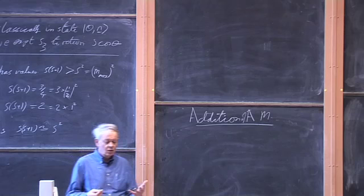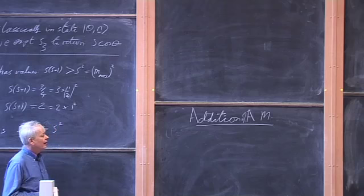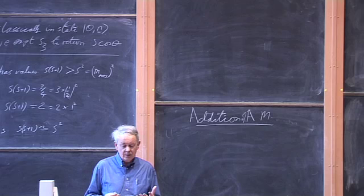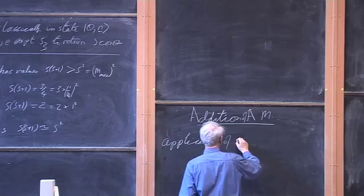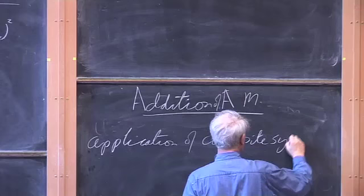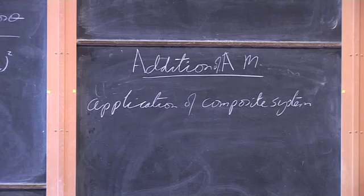We want to know what are the states of the atom in which the atom has well-defined angular momentum. This is an application of the machinery we introduced earlier this term to discuss composite systems. If you feel unsure about the theory of composite systems, please go back and have a look, because that's what we're going to be applying — all that stuff about Einstein, Podolsky, Rosen, et cetera.